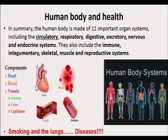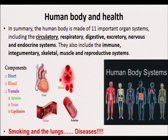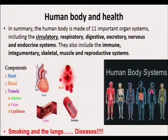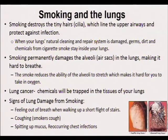The last topic is human body and health. The human body is made of 11 important organ systems, including circulatory, respiratory, digestive, excretory, nervous, endocrine, immune, and skeletal systems. You need to know the human body systems and the main components of the circulatory system: the heart, the blood, and the vessels — which include arteries, veins, and capillaries. You should be able to mention the components of the circulatory system and give their functions.